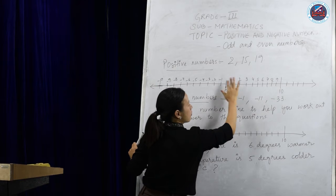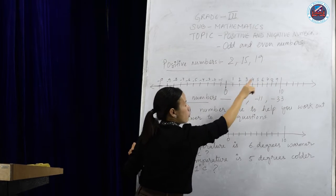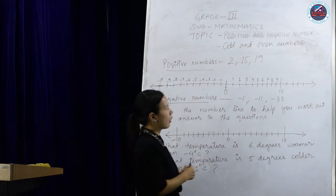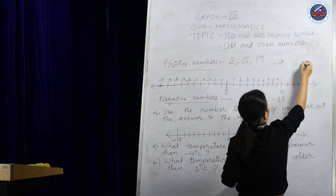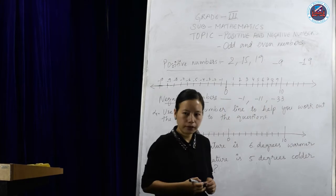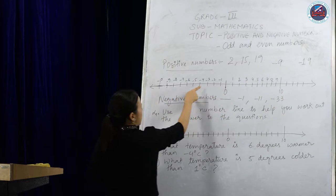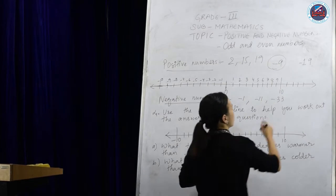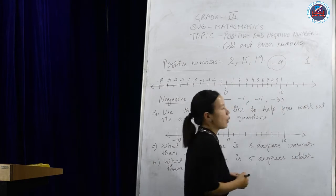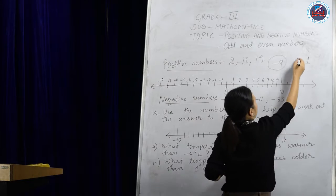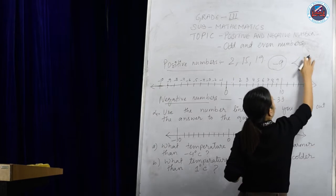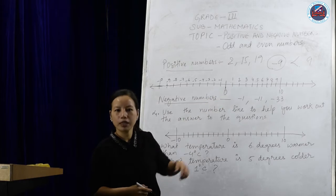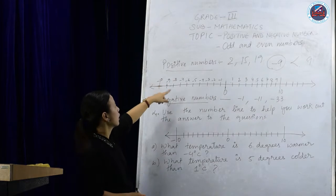That is the difference between positive and negative numbers. For the positive number, the bigger the number, the bigger will be the value. And for the negative number with the negative sign, the more the number, the lesser will be the value. For example, if I give you minus 9 and minus 19, which one is bigger? The bigger the number with the negative sign, the lesser the value — so minus 9 will be bigger. And if I compare minus 9 with 1, then 1 will be bigger. And comparing 9 with minus 9, your 9 is bigger and minus 9 is less.